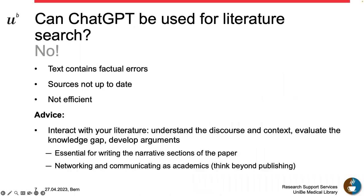So can ChatGPT be used for literature search? I don't think so. The text it produces has factual errors, sources are not up to date, and it's not an efficient process — it takes a lot of time to fact-check. My advice is to interact with your literature: understand the discourse, understand the context within which you're working, evaluate the knowledge gap, and develop your arguments. All of this helps when you write the narrative sections of your paper — the introduction and discussion. And once you know your literature and the people working in your field, you can have meaningful conversations at conferences and create collaborations that are helpful for your research. Think beyond publishing.